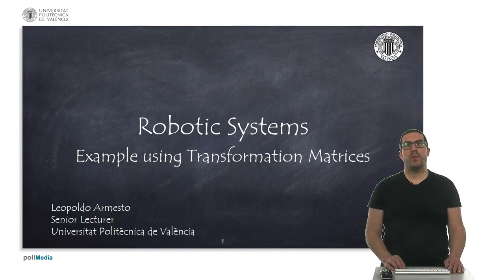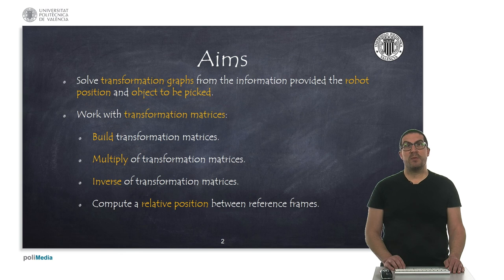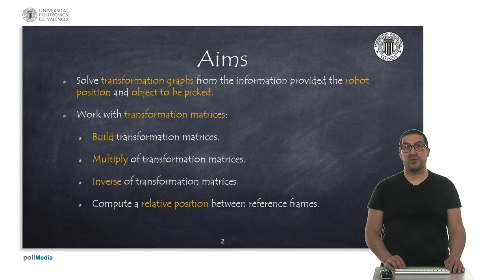Hello. In this video I will present an example to consolidate some of the concepts acquired with transformation matrices. The aims of the presentation are to solve transformation graphs involved in a classic object grasping operation, where the robot position is provided as well as the position of the object to be picked. By doing that, we will consolidate concepts such as building transformation matrices, multiplication of transformation matrices, and computing the inverse of a transformation matrix, to compute the relative position between reference frames.